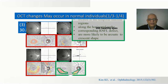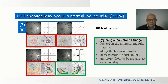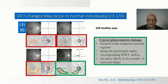That study showed that typical glaucoma damage is located in the temporal macular region, respects the horizontal raphe, and there should be a corresponding retinal fiber layer defect. The changes are most likely to be arcuate or crescent in shape.